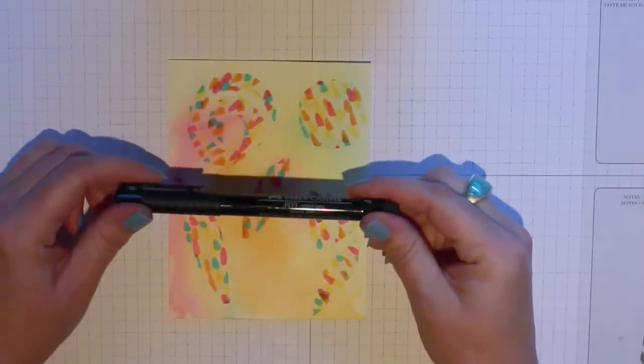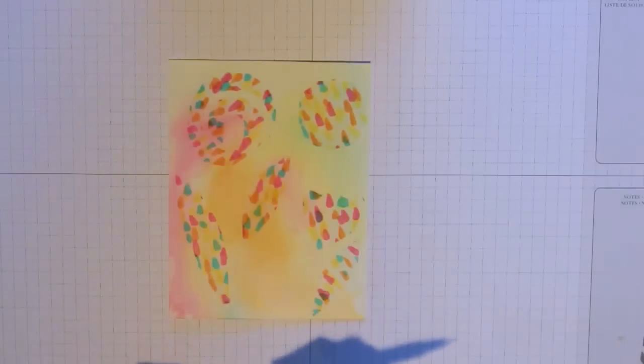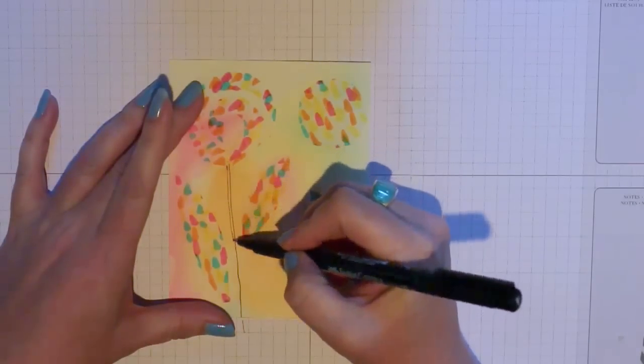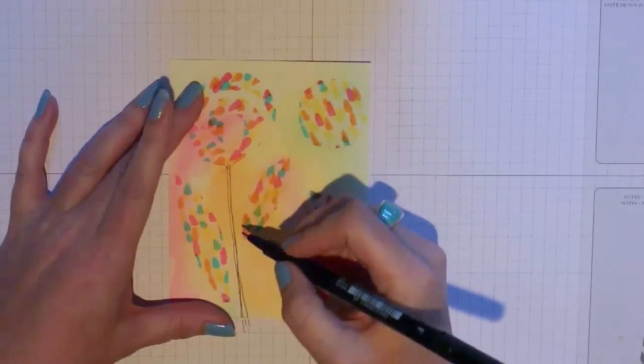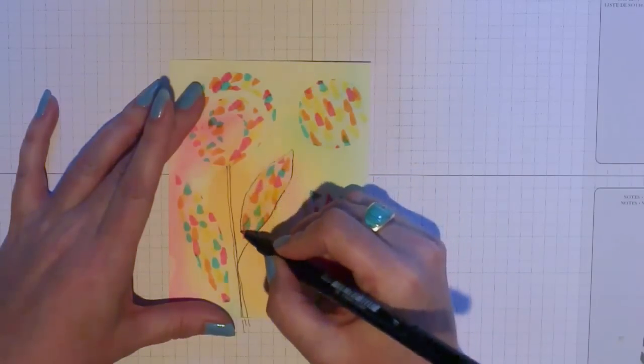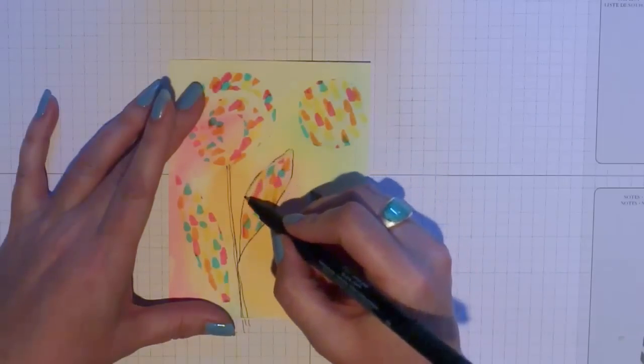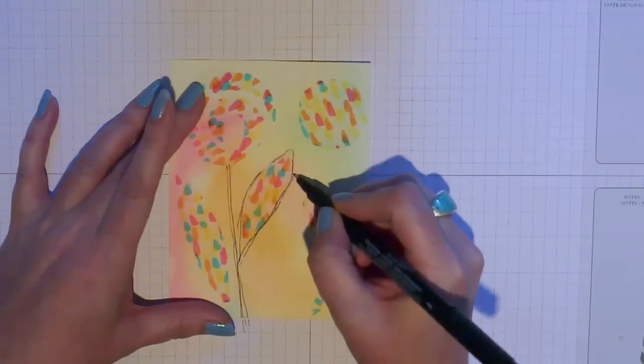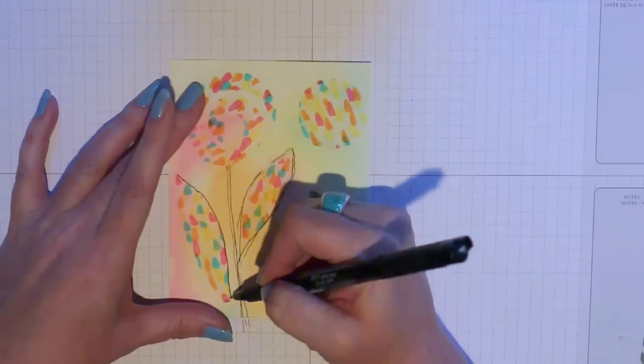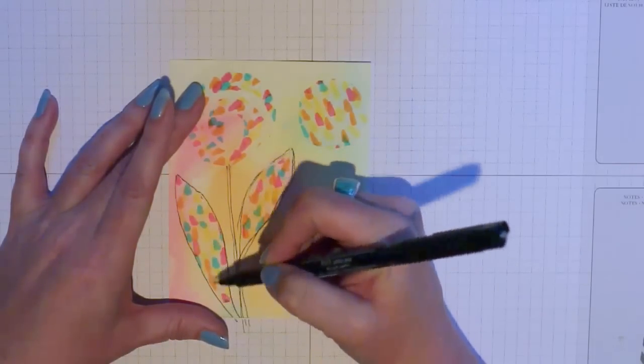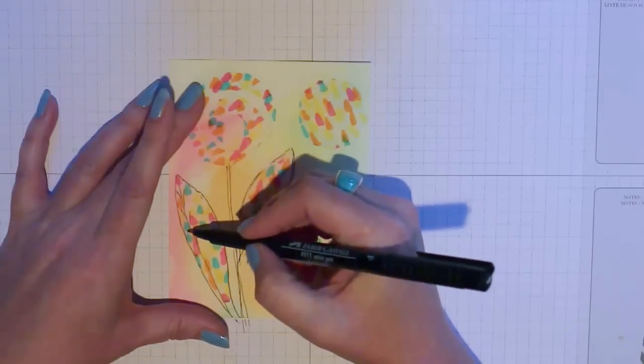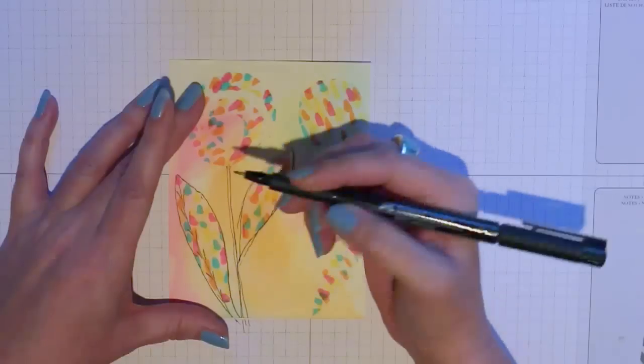Next I'm going to take a Faber-Castell pen with the fine and extra fine point, and I'm using the fine point here. I'm just going to draw some very loose sketchy accents around these shapes. Now you want to make sure that your gel medium is completely dry when you do this. I am terrible at this and I actually didn't wait long enough, and so several times my pen will stop working and I'll have to scribble and get it started again because it's actually picking up a little bit of the medium.